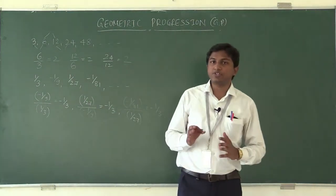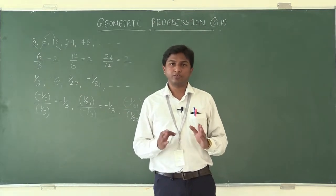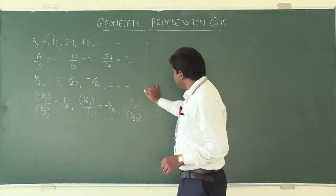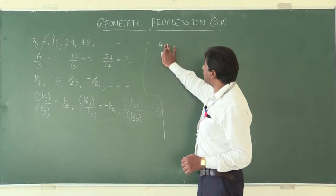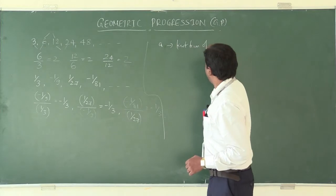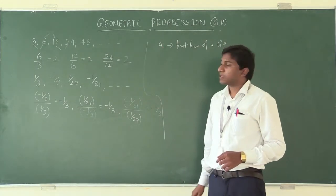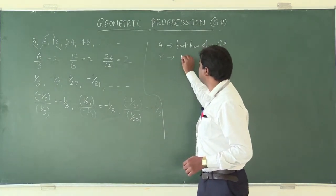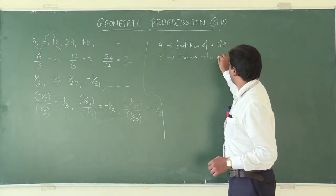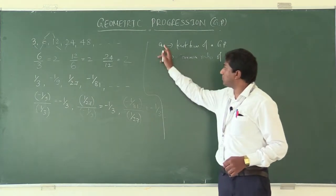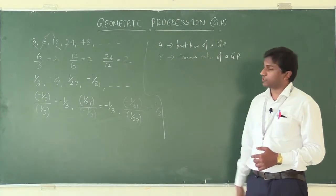There is a slight change between AP and GP: under AP we had a common difference, whereas here under GP we have a common ratio. The first term of a GP we denote by small letter a, and the common ratio we denote by small letter r.